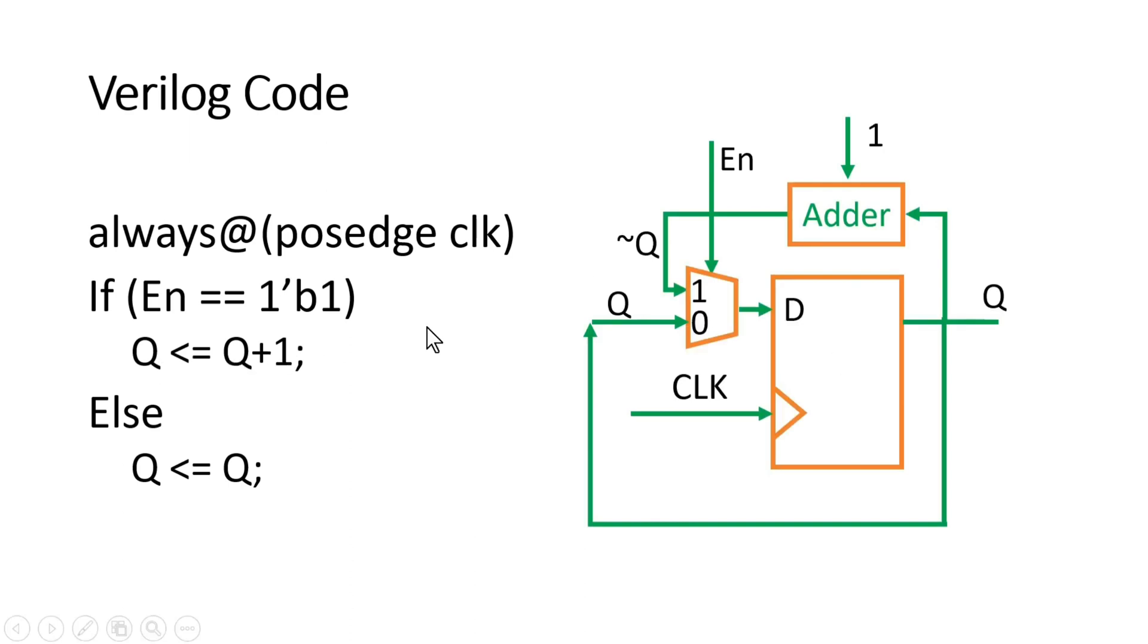So instead of NOT gate here, so we need to put an adder. So one of the input will be Q, another will be logic one, and its output will be fed to one of the input of this multiplexer, and another input will be Q only. In fact, this 1-bit adder is a NOT gate only. Synthesizer will implement it as a NOT gate only.